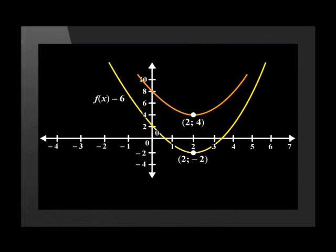Let us translate this graph 6 units down. Our new function has a y intercept of 2 and a turning point of 2, negative 2. Once again, we see that all the x coordinates stayed the same, but the y coordinates changed.